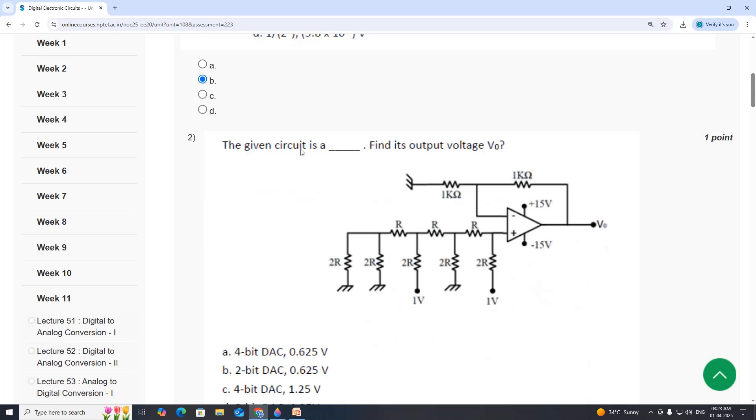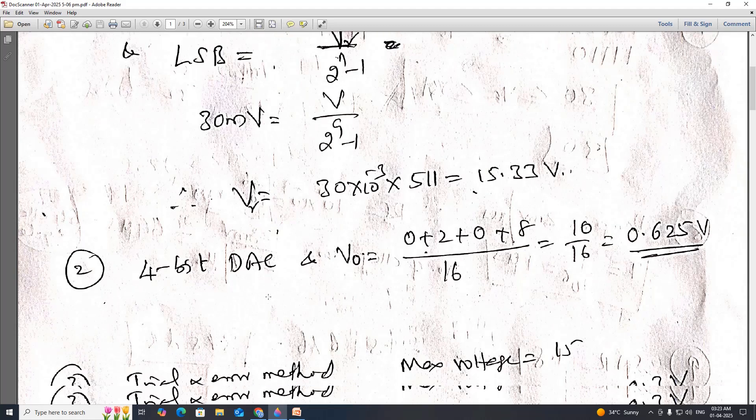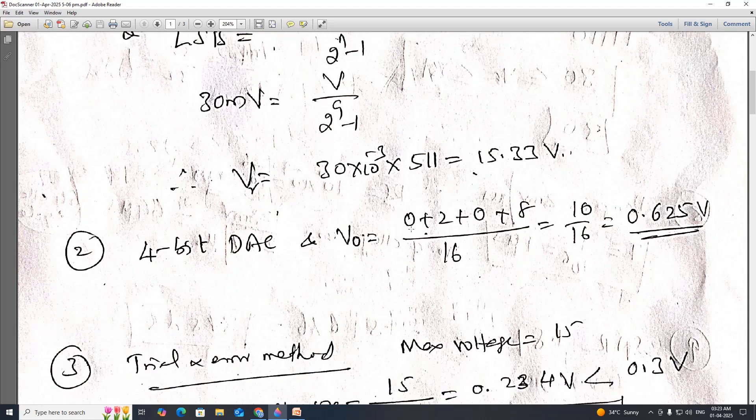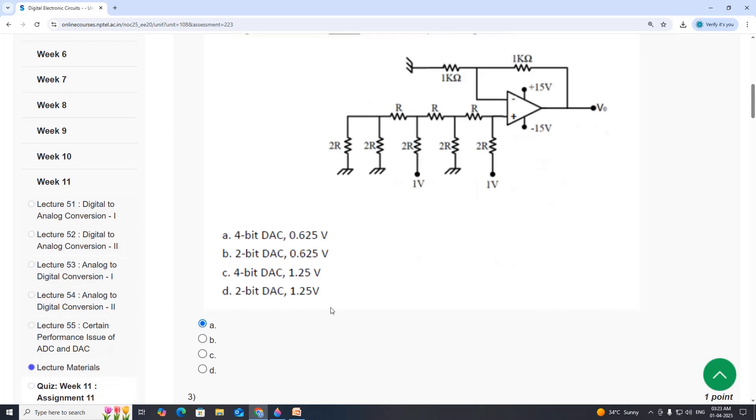Next one: the given circuit is shown, find its output voltage. So it is a 4 bit DAC, and output is equal to 0 plus 2 plus 0 plus 8 divided by 16, which equals 0.625. Option A.